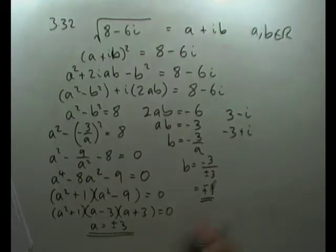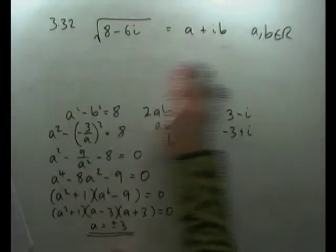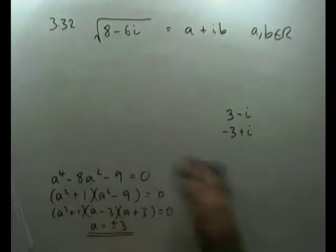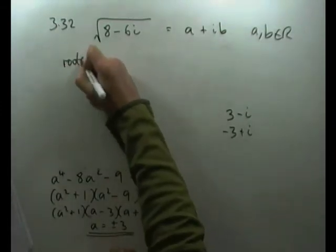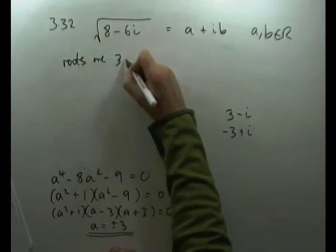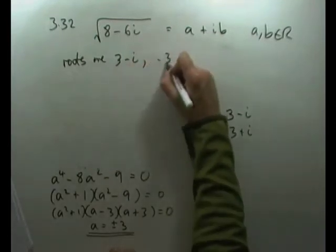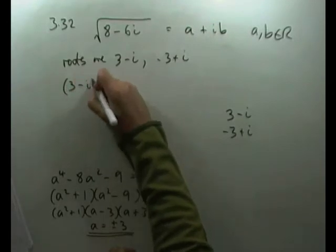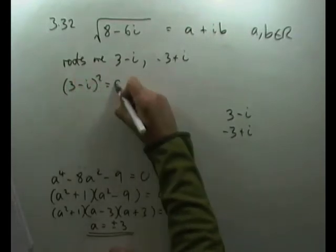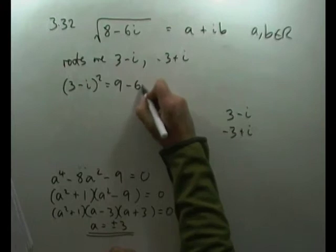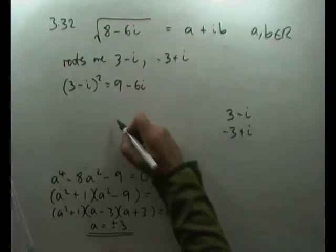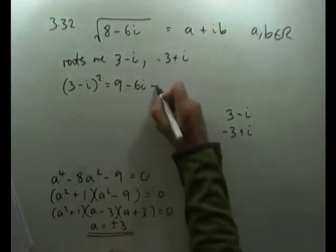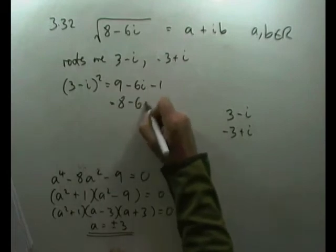I can quickly check by squaring one of them. (3 - i)² = 9 - 6i + i² = 9 - 6i - 1 = 8 - 6i. Confirmed.